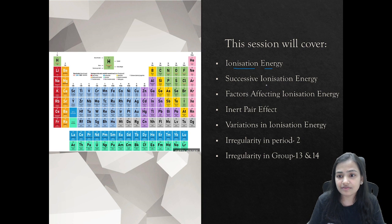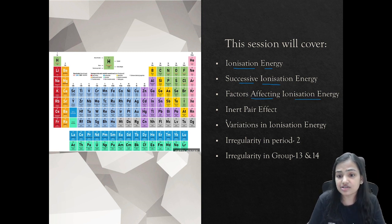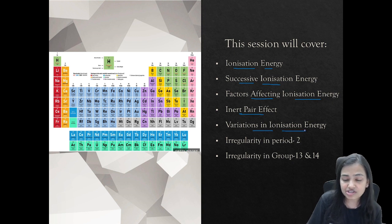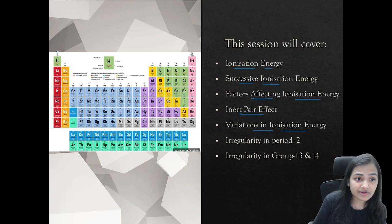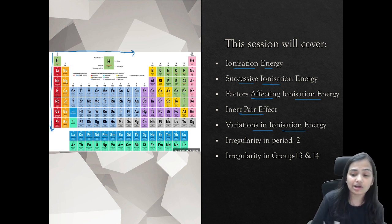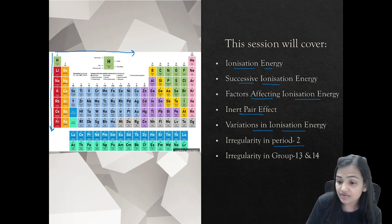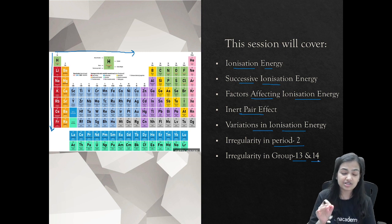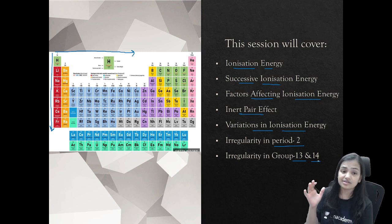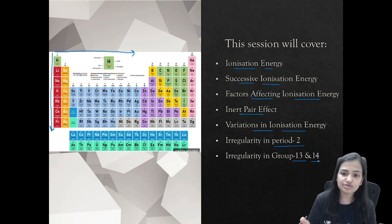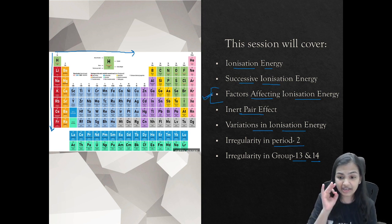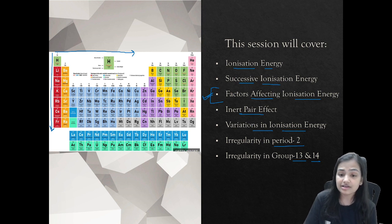We will have a focus on ionization energy, we will see the successive ionization energy - what happens when we remove one electron, then another, then another. We will cover the factors that affect ionization energy, what is the inert pair effect and its role in determining IE, the variations in ionization energy moving left to right along a period, top to bottom along a group, and the irregularities in period 2, group 13, and group 14 elements.